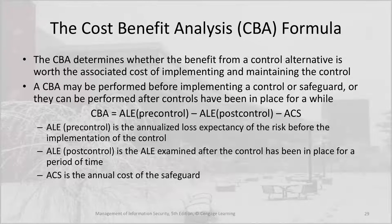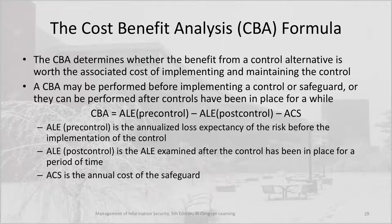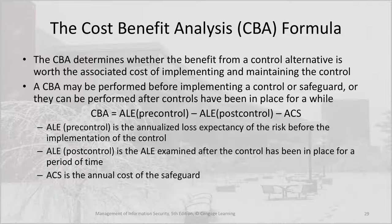The cost-benefit analysis determines whether the benefit from a control alternative is worth the associated cost of implementing and maintaining the control. A CBA may be performed before implementing a control or safeguard, or after controls have been in place for a while. In the formula, the CBA equals the pre-control annualized loss expectancy minus the post-control annualized loss expectancy minus the annual cost of the safeguard itself.